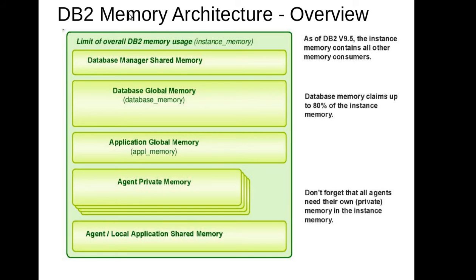In the last tutorial we stopped near the instance memory DB2 instance configuration parameter. Today we are going to see in detail about the instance memory and how it helps to fine-tune the database memory and the application memory. This is a very important parameter, but in most cases I see people setting this parameter to automatic and just leaving the system like that. So before getting into the instance memory parameter, we have to understand the DB2 memory architecture.